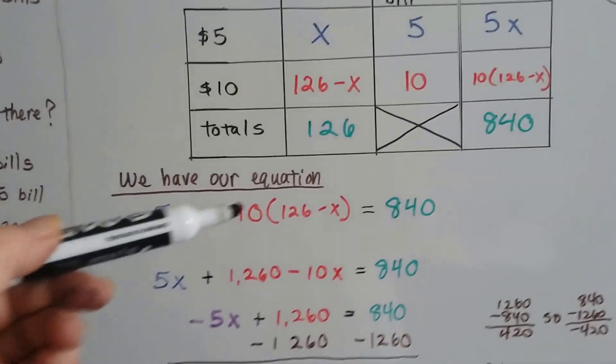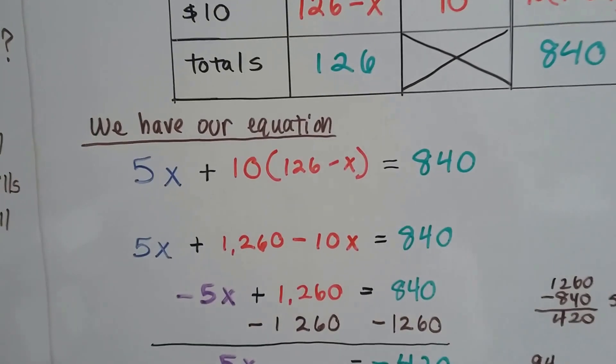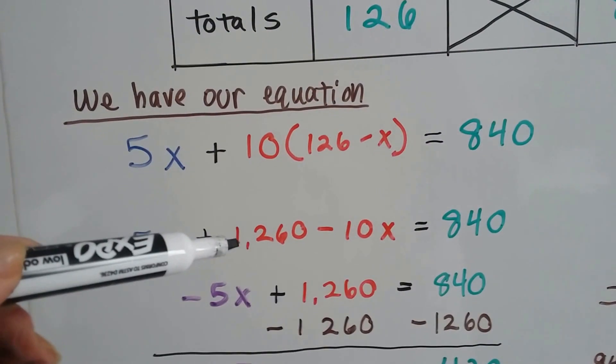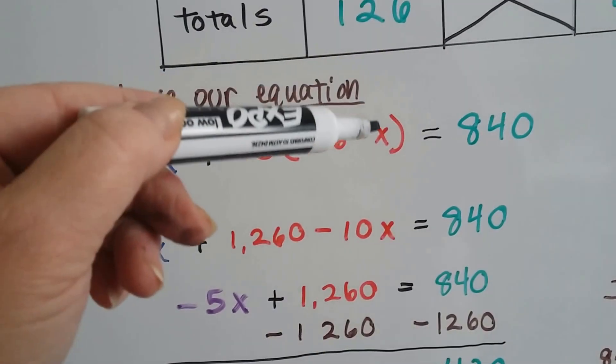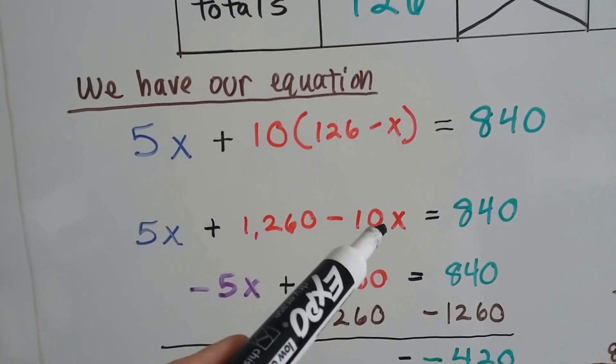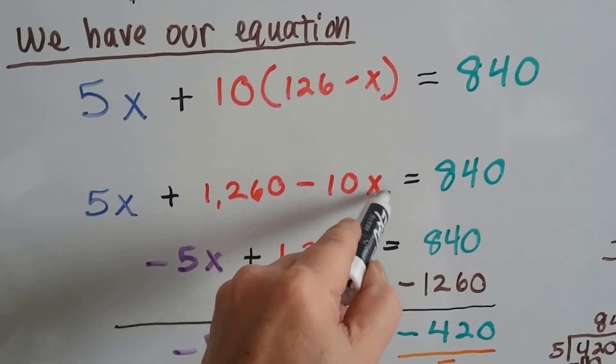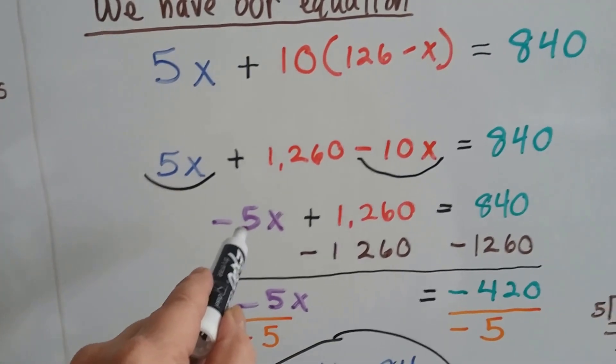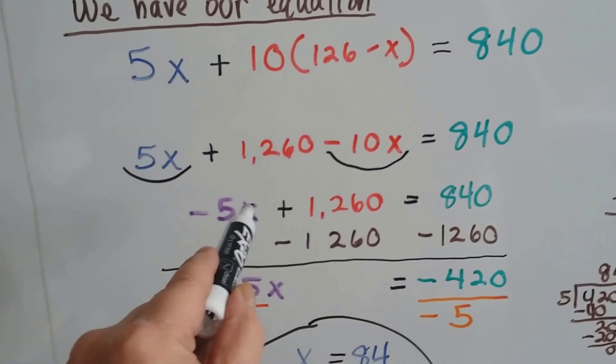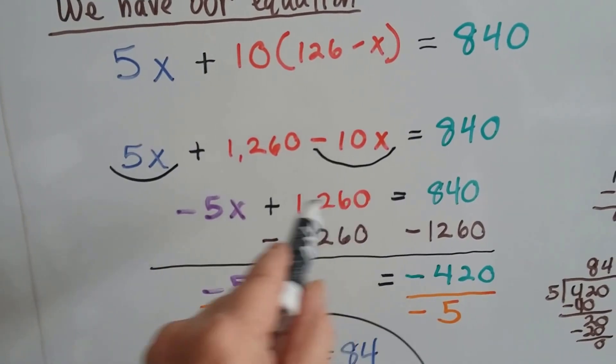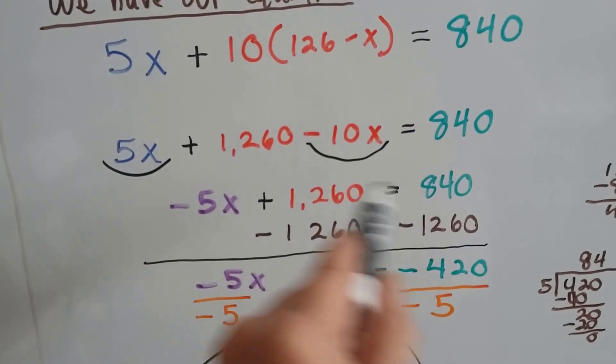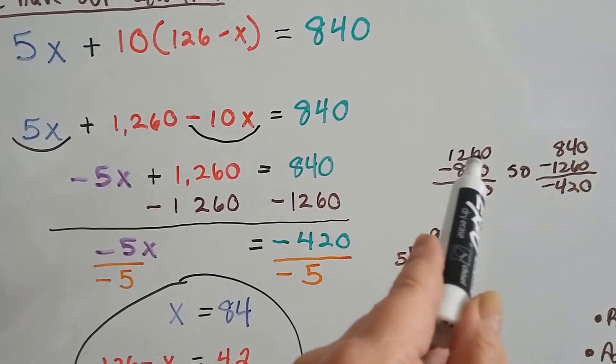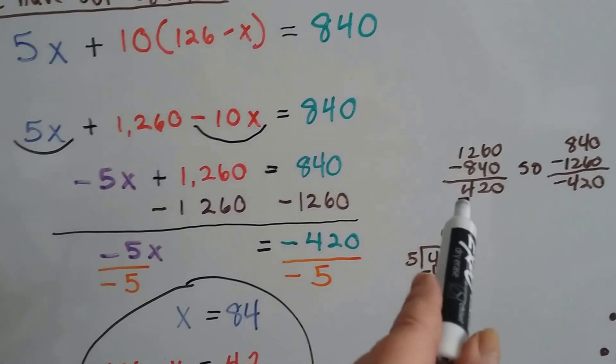We have to do distributive property. We do 10 times 126 and get 1260. And 10 times negative X, and we get minus 10X. Now we can combine this minus 10X and this 5X to get a negative 5X. To isolate the X, we can subtract 1260 from each side. That's going to put that one into the negative. 1260 minus 840 is 420. So that means 840 minus 1260 is a negative 420.